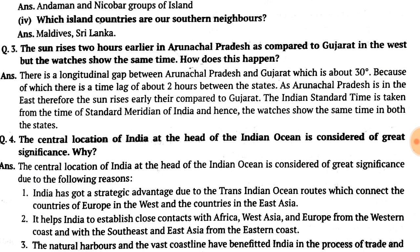Since 15 degrees of longitude equals 1 hour, a 30-degree gap means a 2-hour difference. Arunachal Pradesh is in the east, so the sun rises earlier there compared to Gujarat. However, the watches show the same time because India uses Indian Standard Time, which is taken from the standard meridian of India. Hence, the entire country follows the same IST. A detailed explanation including the standard meridian and time lag is available in the chapter playlist.